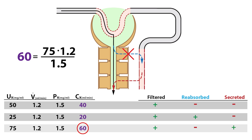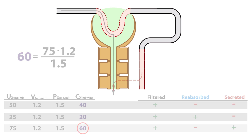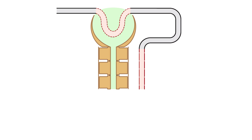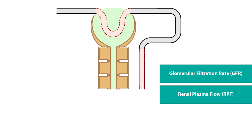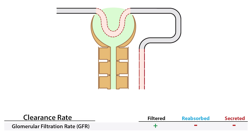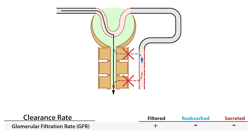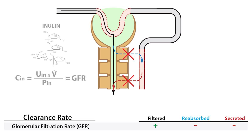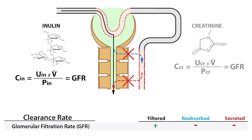Now let's turn our attention to how we can use clearance rate to assess two very important renal functions: glomerular filtration rate and renal plasma flow. To use clearance rate to assess GFR, the molecule must be freely filtered, not reabsorbed, and not secreted. Two such molecules are typically used: inulin, a plant-based polysaccharide, and the endogenous molecule creatinine, which is a byproduct of the breakdown of creatine phosphate primarily in skeletal muscles.